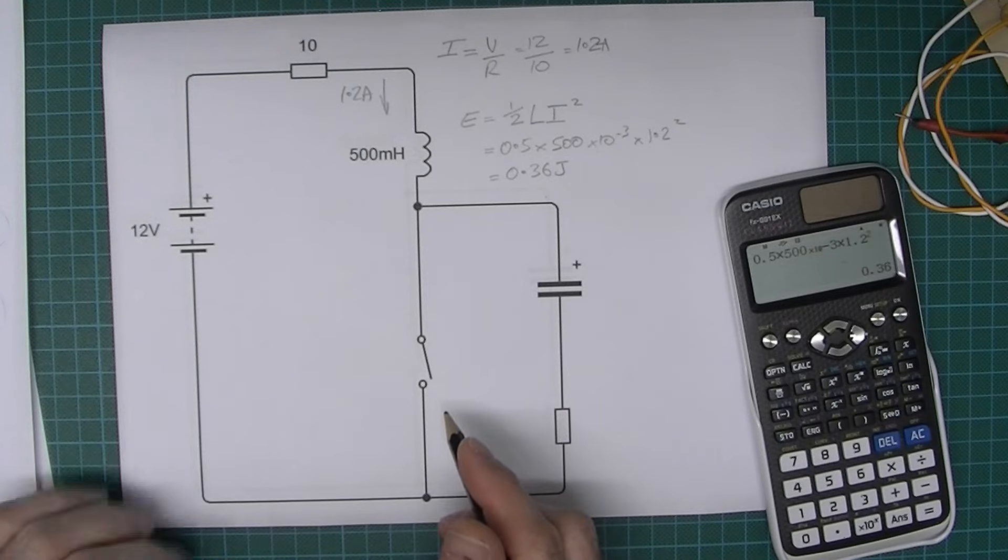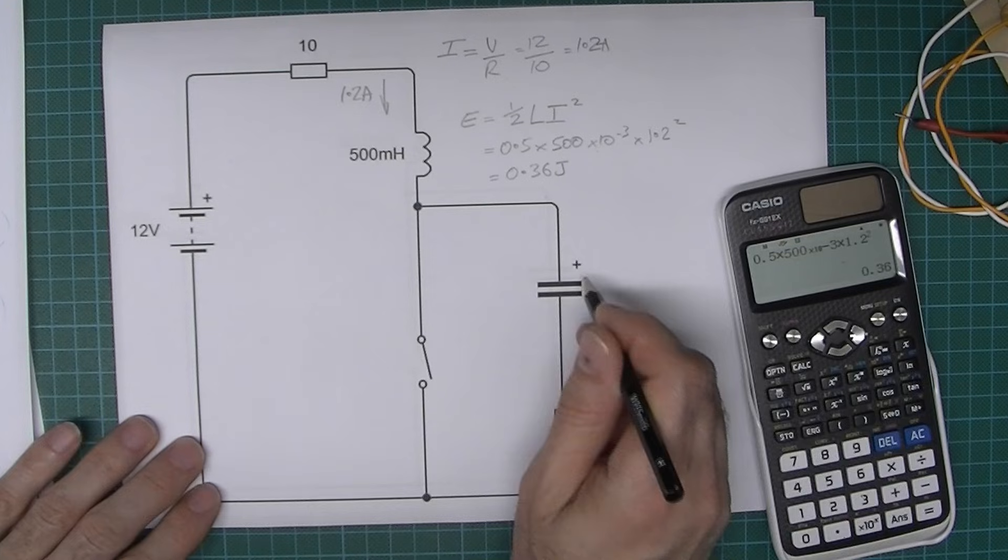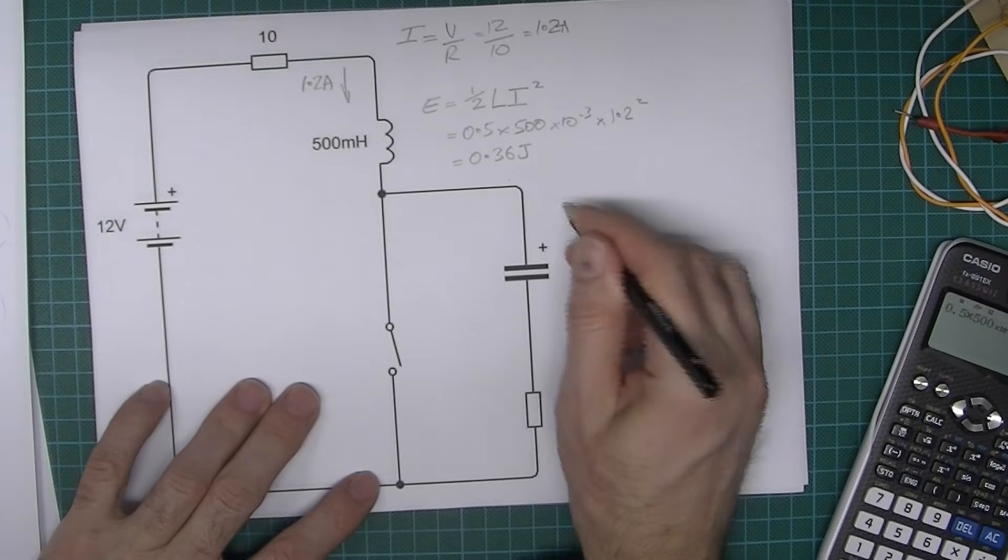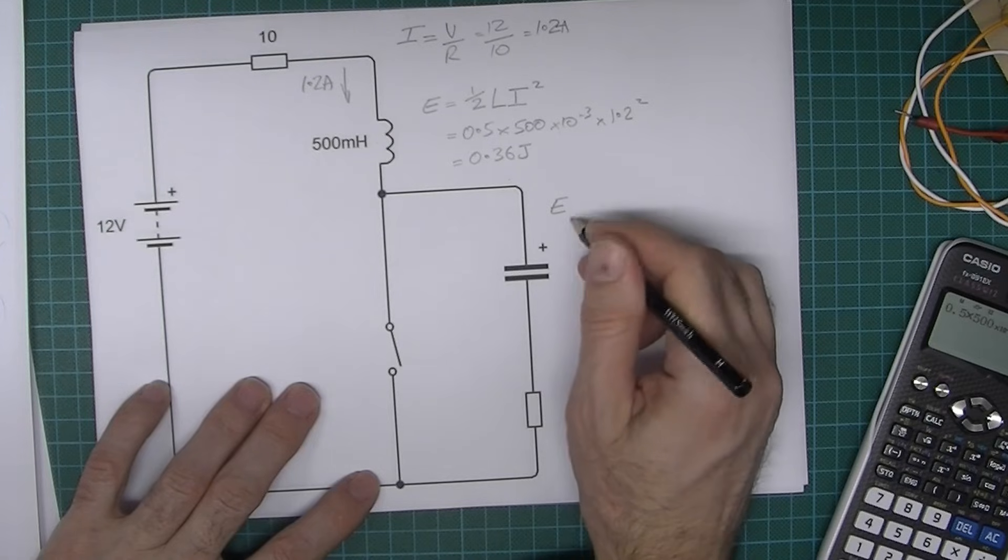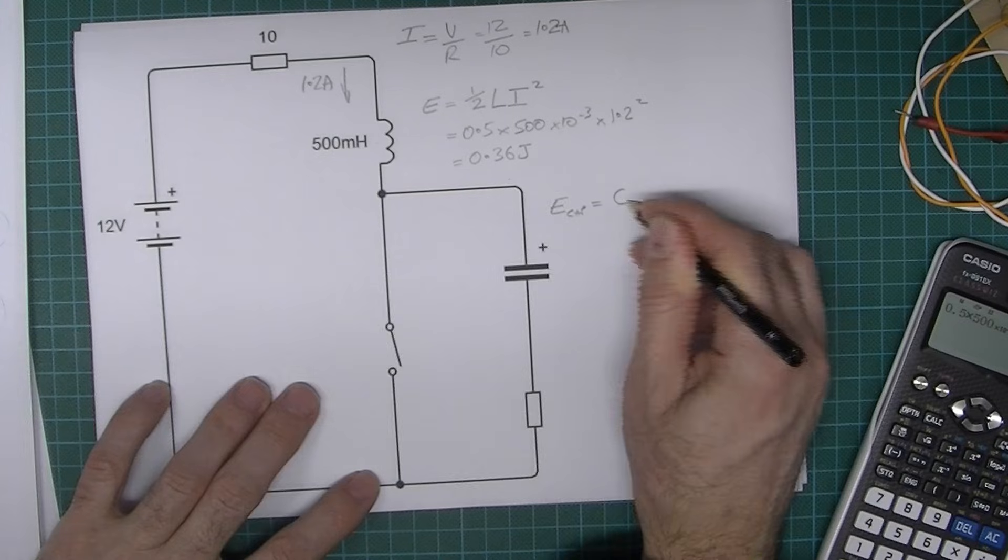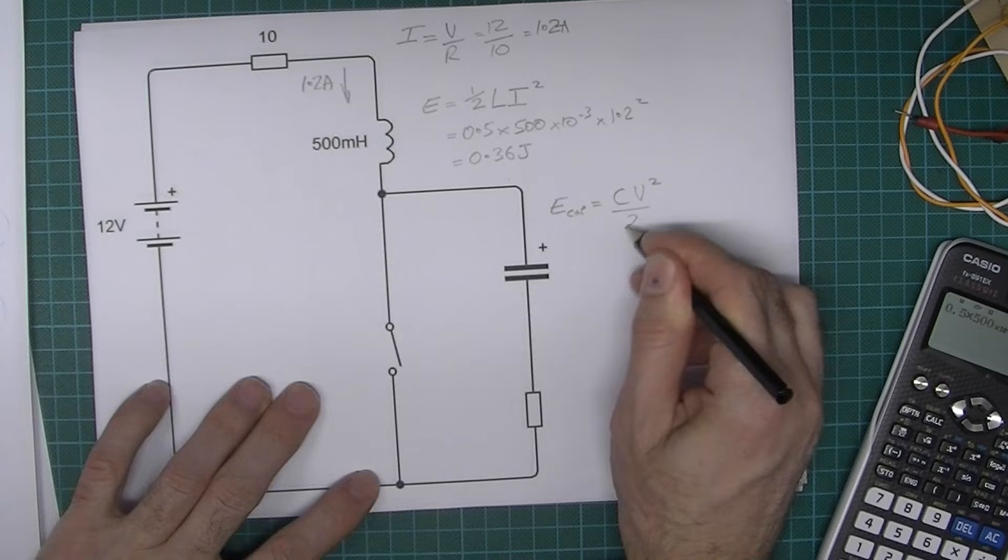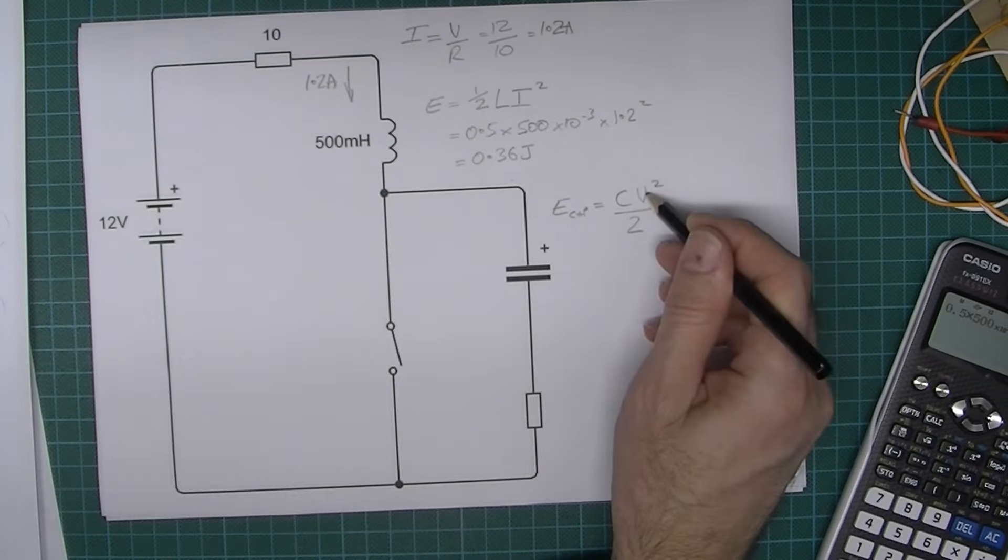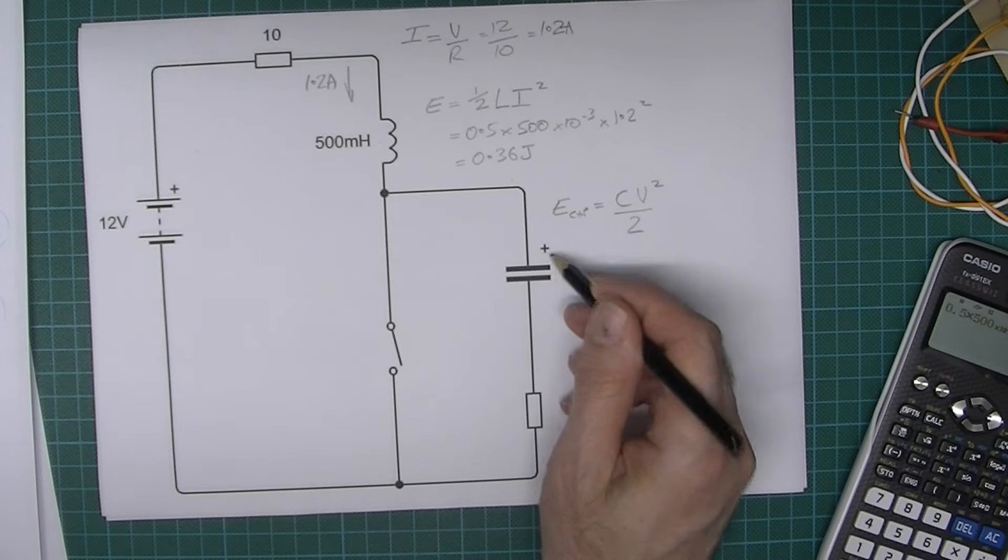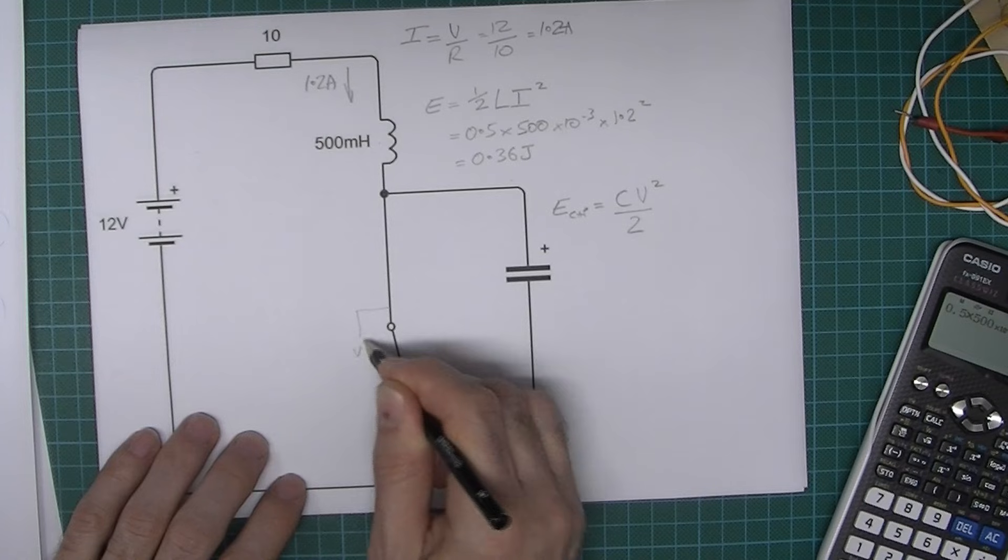The next thing we can do is calculate the value of this capacitor. The formula we want is the energy stored in the capacitor equals the capacitance times the voltage squared divided by two. This voltage is going to be the maximum voltage that we want the capacitor to be charged to, and we need to decide on a value there.